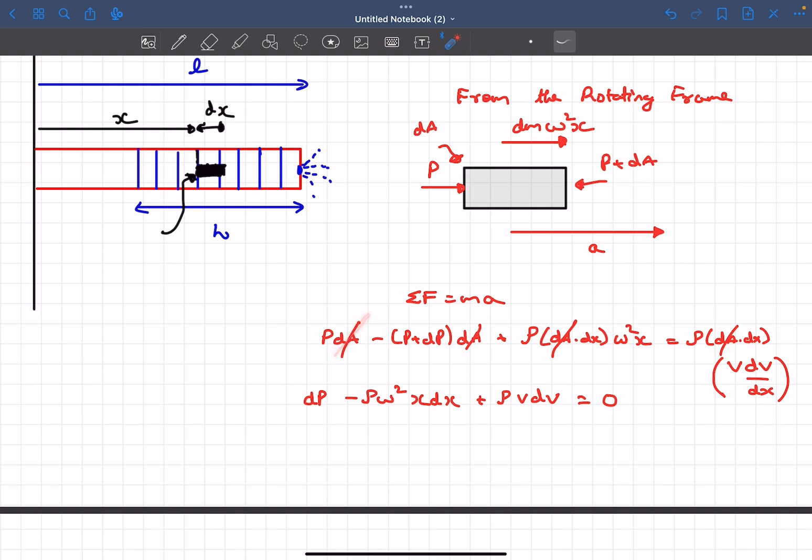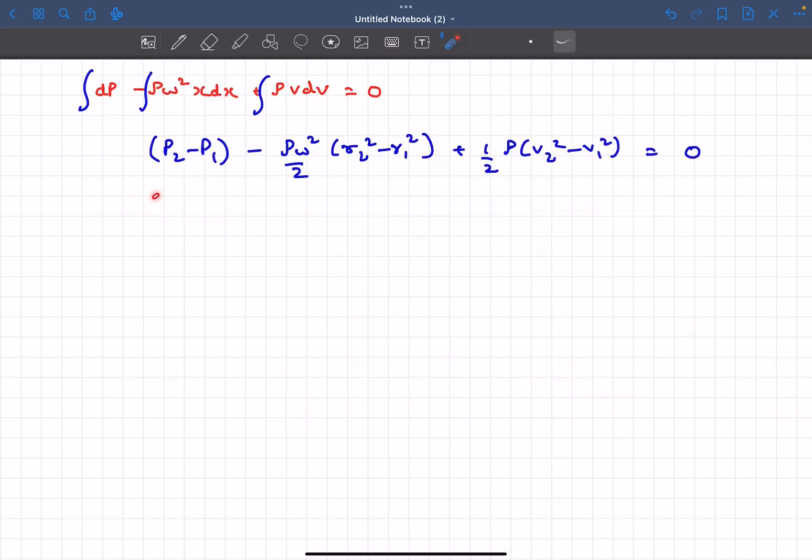After cancelling out the dA terms and rearranging everything, we'll end up with this particular equation. Now if we integrate this expression between any two points on the streamline, 1 and 2, this is the final expression we'll end up with.